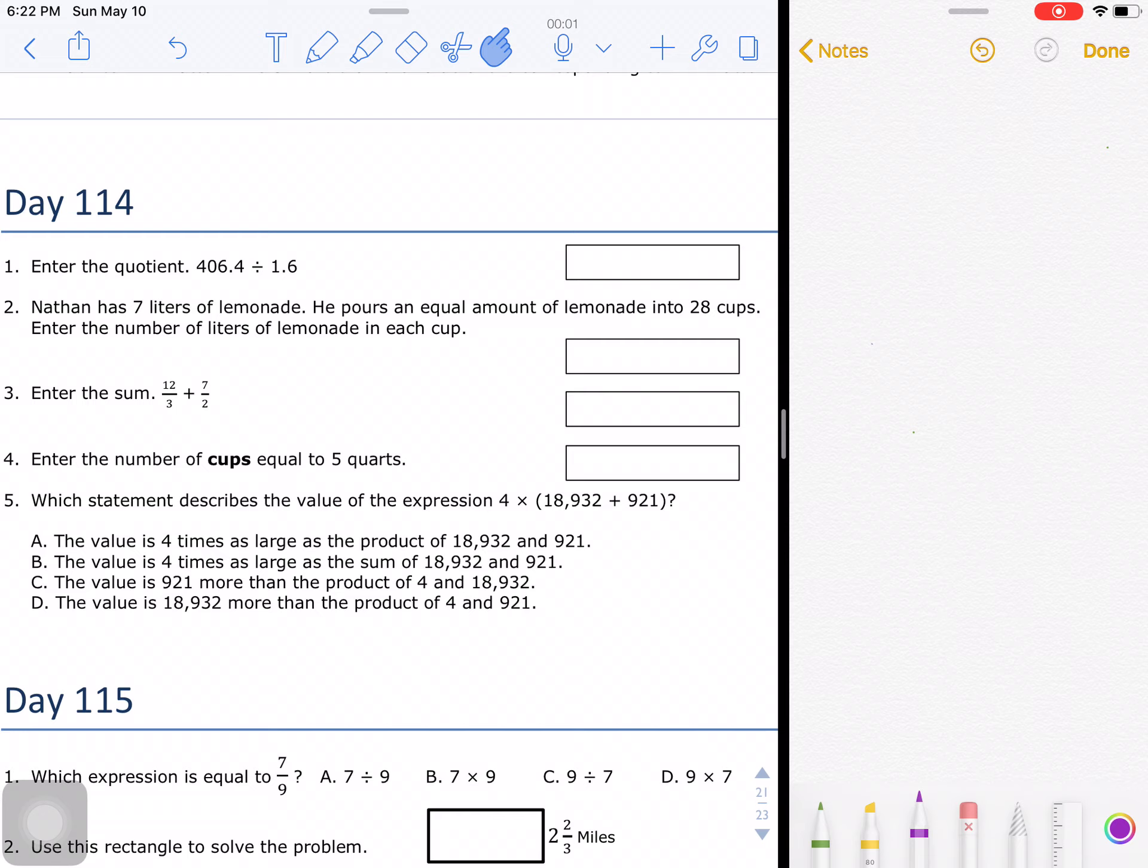Enter the quotient 406.4 divided by 1.6. This is a situation where we have a decimal in both the dividend and the divisor. We're going to think of this as 16 tenths and 4,064 tenths.